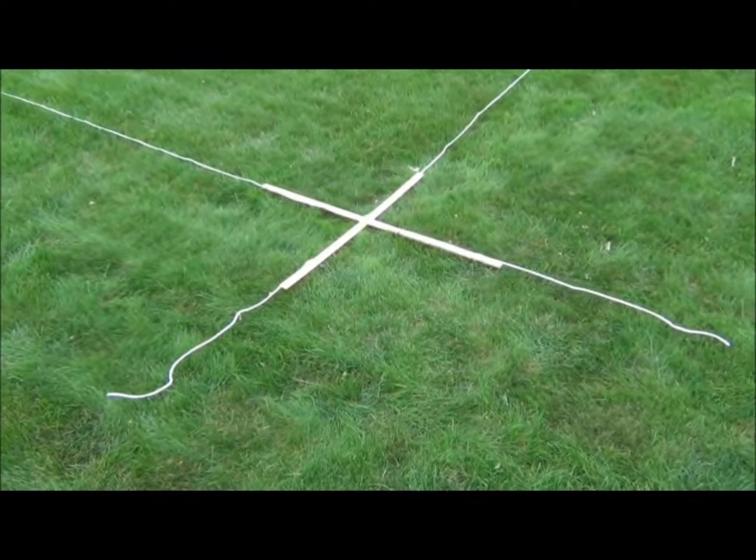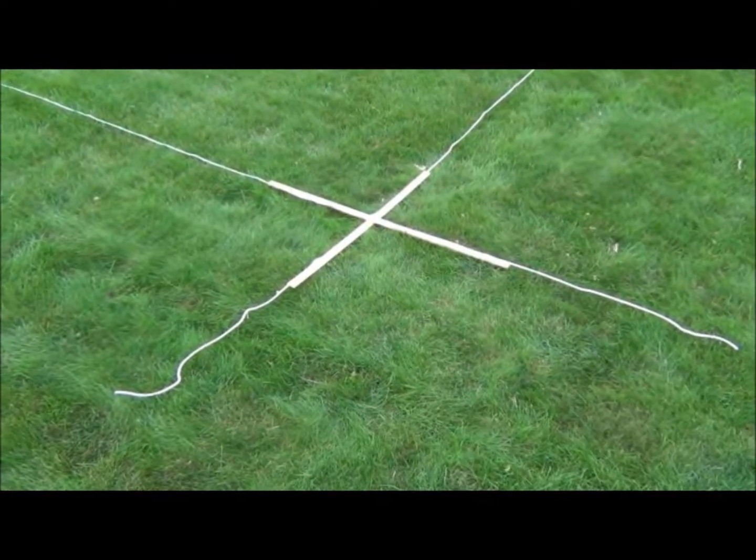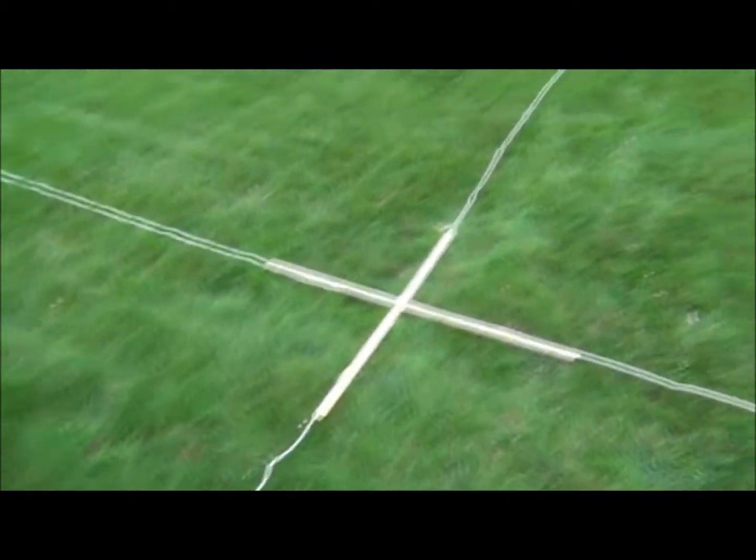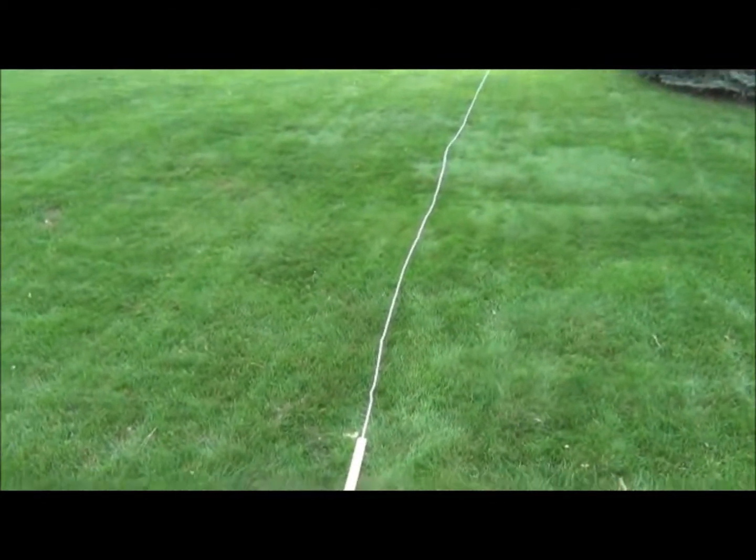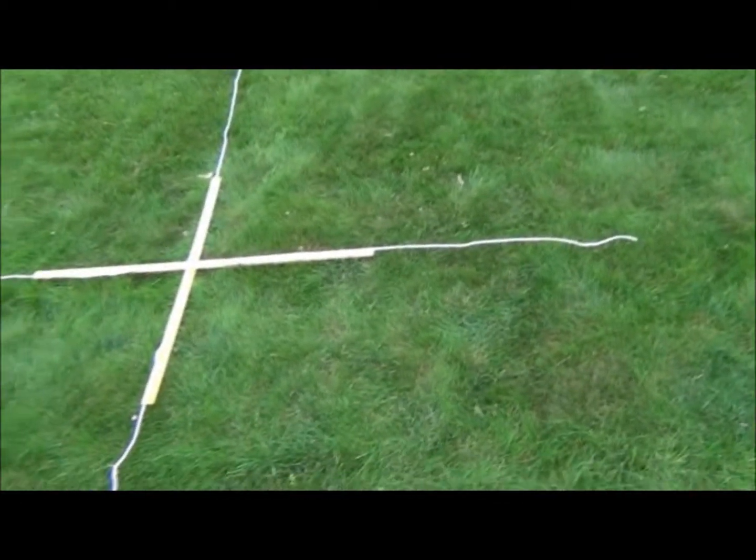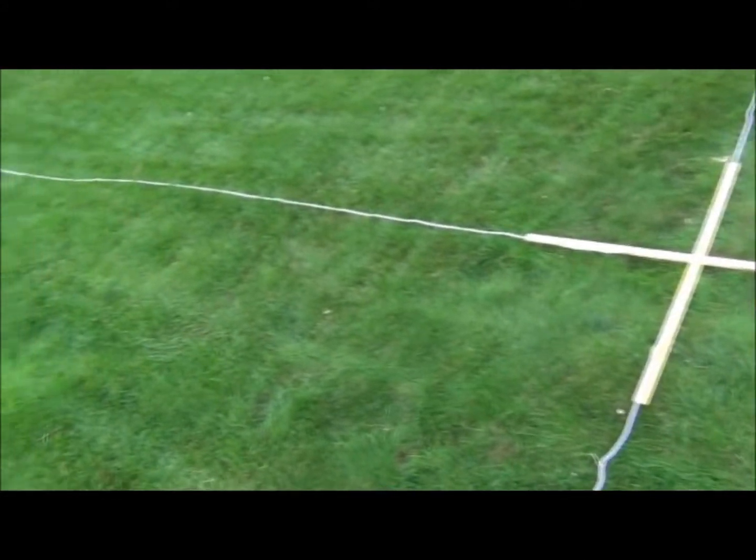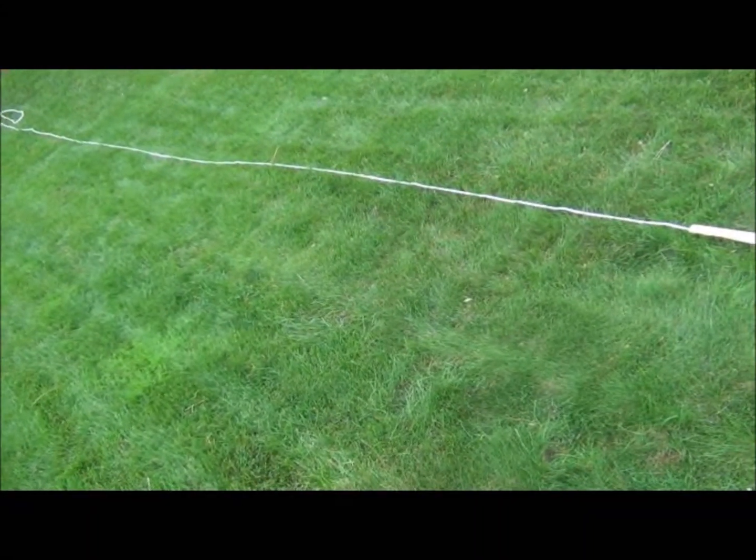Group one, when we've gone outside, will form the x-axis. They will stand along this rope. Group two will form the y-axis. They will extend along this rope.